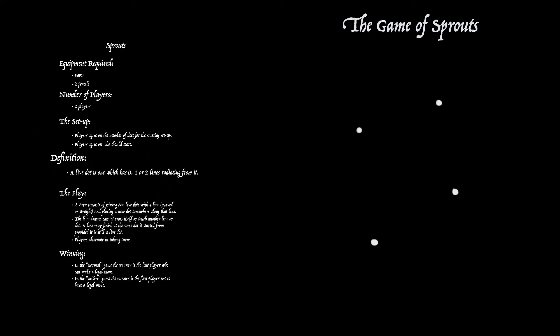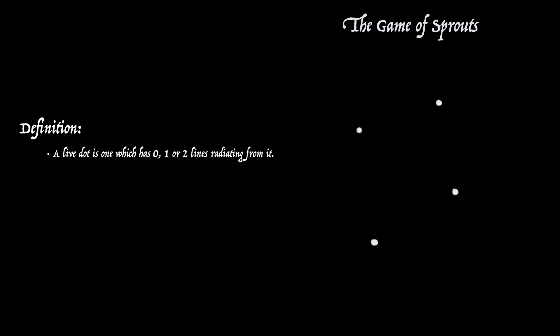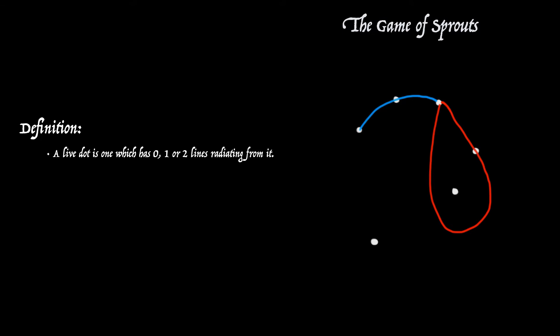There's one definition that you'll need to know, and that's what a live dot is. It's one that has zero, one, or two lines radiating from it. In a typical position in a game, these two dots are live — they have no lines radiating from them. Here's one that's live with only one line radiating from it, and here are another two that are live dots with two lines radiating. But the one at the top with three lines is dead — it's not a live dot.